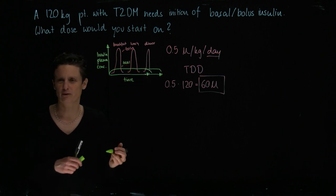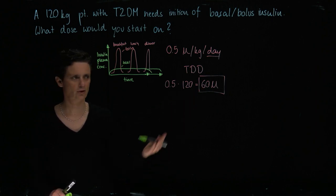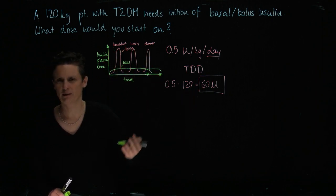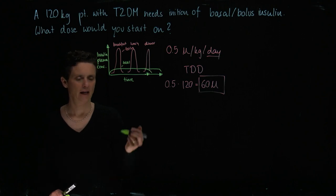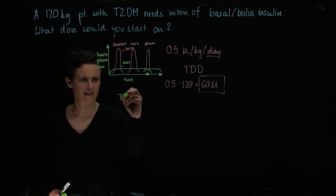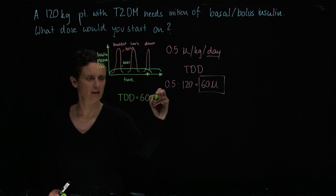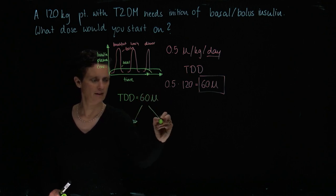And then once a day a basal insulin. So now we have to figure out, we have a total daily dose of 60, but how do we split this apart? It's actually fairly straightforward. We're going to take our total daily dose, and that's for this patient 60 units, and we're just going to half it.